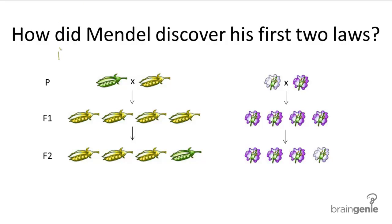Mendel's first two laws of inheritance are known as the law of dominance and the law of segregation. And how exactly did he discover these two laws?